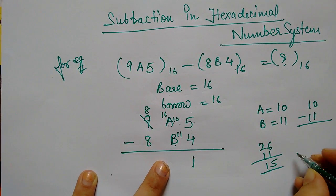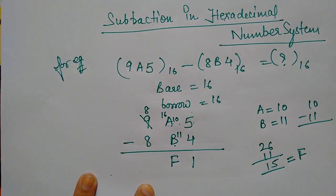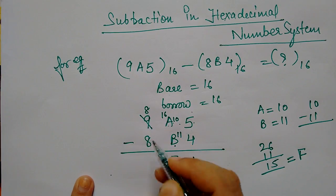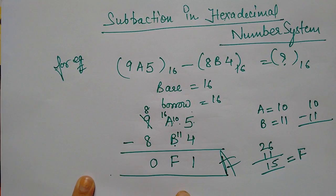Now what do we write in hexadecimal? F. So what is our answer here? 0F1. Now 8 minus 8 is 0. So you can subtract in hexadecimal. Thank you.